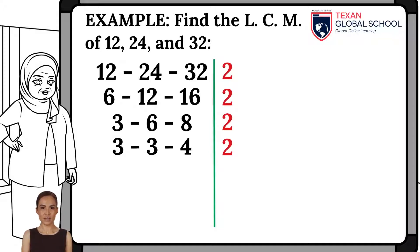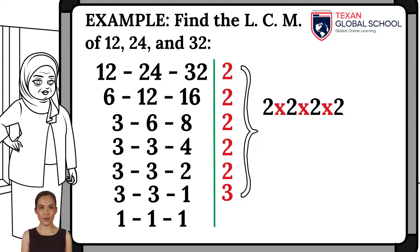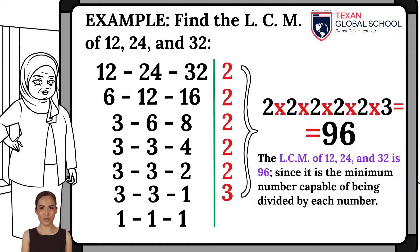Divide again by 2, since at least one number is divisible, resulting in 3, 3, and 2. Again by 2, thus obtaining 3, 3, and 1. Finally, divide by 3, thus obtaining 1, 1, and 1. The product of these multiples will be the least common multiple of that set of numbers, which is 96, since it is the smallest number that can be divided by all those numbers.